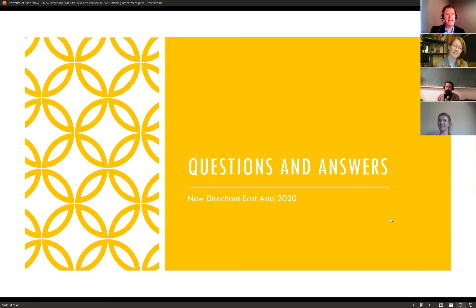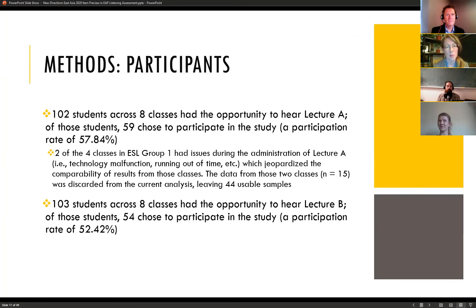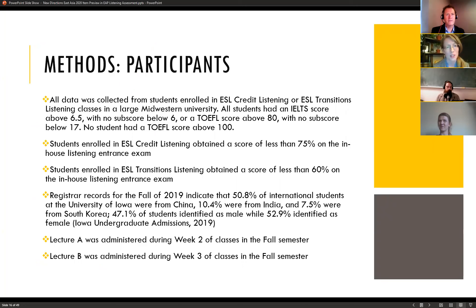Zachary, you mentioned a lack of demographic data, but earlier you mentioned numbers of Chinese, Indian, and South Korean students — what kind of demographic data were you missing? We collected data anonymously from intact classes, so we were not able to collect data on the individual students who participated. We were able to report on the classes as a whole, but we don't know which of those students contributed their data.